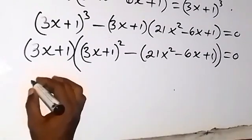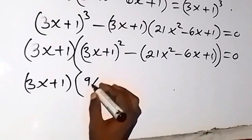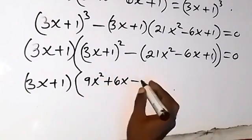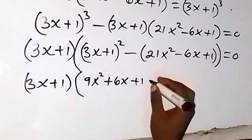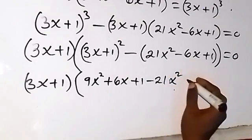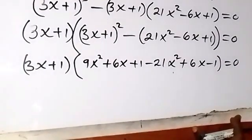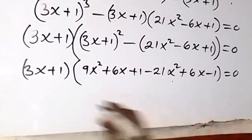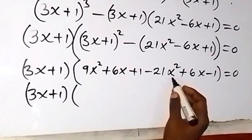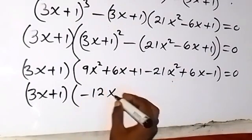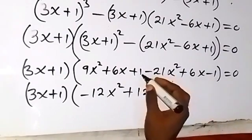Expanding (3x plus 1)² gives 9x² plus 6x plus 1. Then using the minus sign to open the other bracket: minus 21x² plus 6x minus 1. Collecting like terms: 9x² minus 21x² is minus 12x², and 6x plus 6x is plus 12x, and plus 1 minus 1 cancel. So we have (3x plus 1)(minus 12x² plus 12x) equals zero.